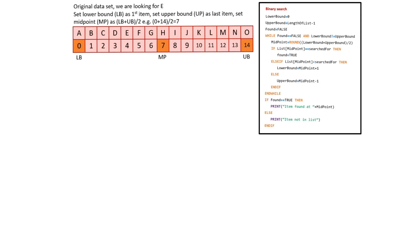We set the lower bound as the first item — that's index 0. We set the upper bound as the very last item — that's index 14. We then calculate the midpoint by taking the lower bound 0 plus the upper bound 14 and dividing by 2. We end up with 7, so the midpoint is here.